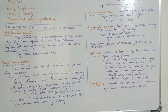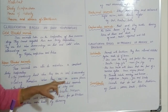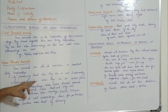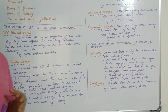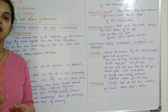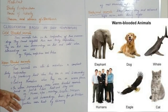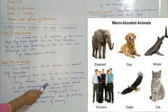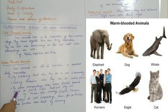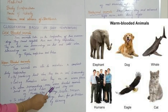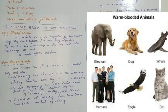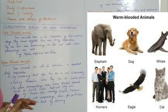Warm-blooded animals maintain a constant body temperature by producing heat when they are in cold surroundings, and cooling themselves when they are in warm places. They cool themselves when in warm places by producing sweat or by panting — they lose heat and stay cool. In warm surroundings, some warm-blooded animals sweat or pant and lose heat to stay cool.